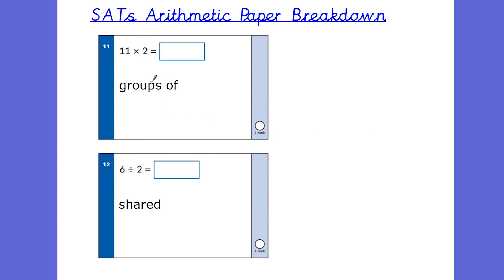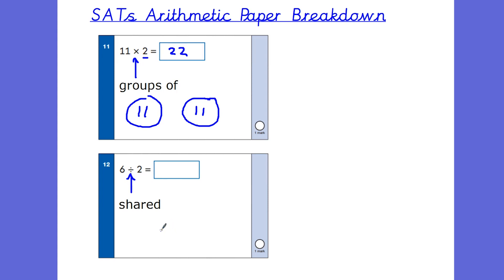We've got two questions here. First, 11 times 2 — it's the 2 times table, so two groups of 11. You could write 11 in each group or draw 11 dots in each, giving 22. Then 6 divided by 2 is our first division question. Tell the children that division sign means sharing — imagine we've got 6 sweets sharing between 2 friends. Share out the 6 sweets equally: each person gets 3. So 3 is the answer.